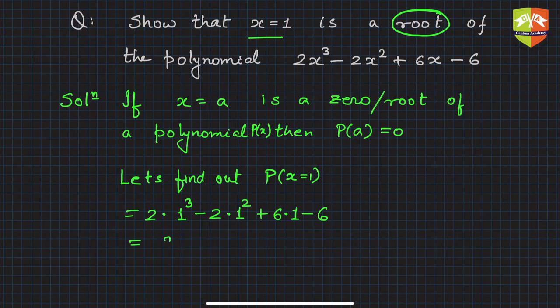Since P(1) is 0, we can write: since P(1) is 0, therefore x equals 1 is the zero or root of P(x). Hope you understood this.